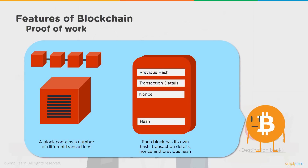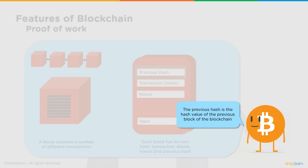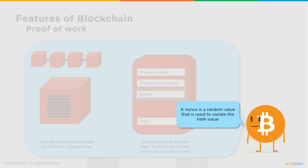Let's look at the typical structure of a block in a blockchain. A block contains n number of transactions aggregated by the miner. The block header has four attributes: previous hash, transaction details, nonce, and the hash of the block itself. The previous hash is the hash value of the previous block — this is how blocks are linked, as the current block contains the hash of the previous block. The transaction details field contains the details of all transactions aggregated as part of this block. The nonce is a random value used to generate a hash value less than the target designated by the network for each block.